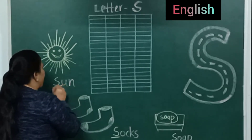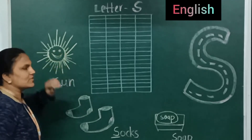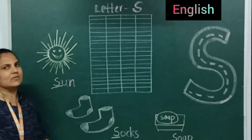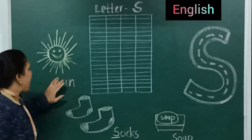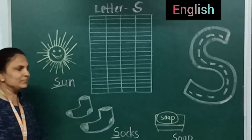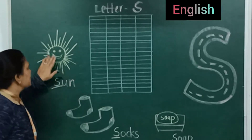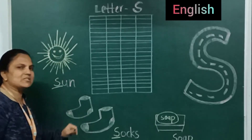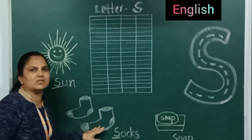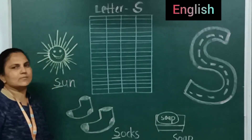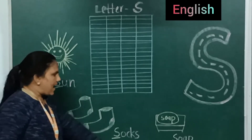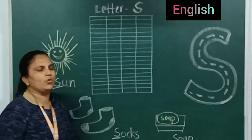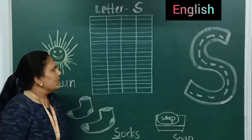S for sun. Which letter is this? S for sun — S, U, N, sun. And which feature is this? Yes, this is the feature of soap. S, O, A, P — soap.